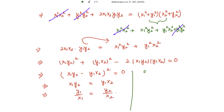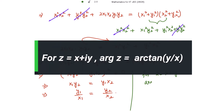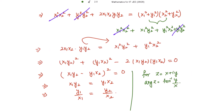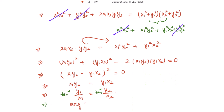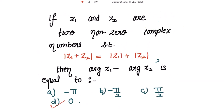Now because for z equal to x plus iy, tan inverse of y over x gives the argument, taking tan inverse both sides gives argument of z₁ equal to argument of z₂. Taking argument z₂ to the other side, we get argument of z₁ minus argument of z₂ equal to 0. So option D is the right answer.